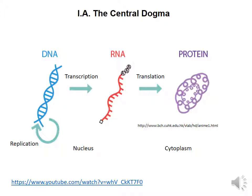This diagram represents the central dogma of life, which includes three different important processes. The first process is called replication. DNA replication is the process by which DNA makes a copy of itself during cell division to perpetuate the information that is encoded in the DNA sequence.